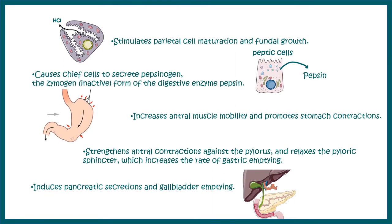Other functions of gastrin include helping the chief cell to secrete pepsinogen, thereby aiding in protein digestion. It increases enteral muscle motility and promotes stomach contraction. It also strengthens enteral contraction against the pylorus and relaxes the pyloric sphincter, which increases the rate of gastric emptying. Additionally, gastrin induces pancreatic secretion and helps in gallbladder emptying.